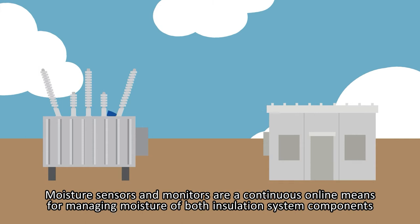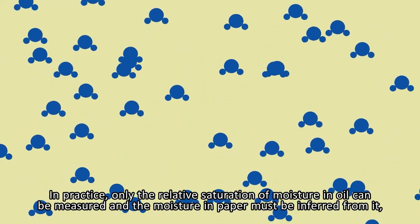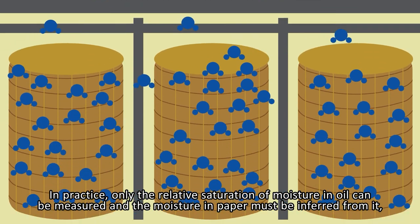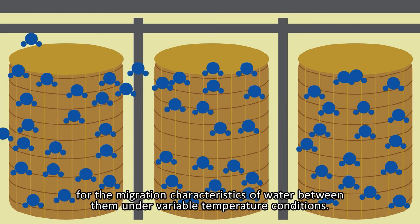Moisture sensors and monitors are a continuous online means for managing moisture of both insulation system components. In practice, only the relative saturation of moisture in oil can be measured and the moisture in paper must be inferred from it, based on the water absorption characteristics of both oil and paper and time taken for the migration characteristics of water between them under variable temperature conditions.